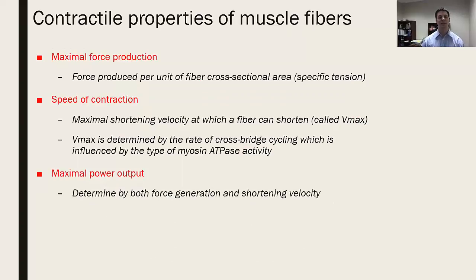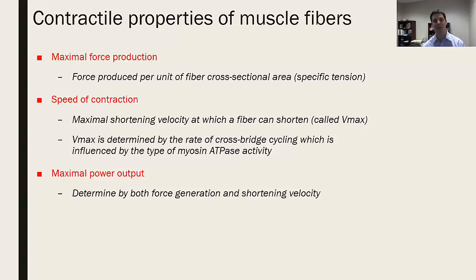If a fiber contains high ATPase activity, it can rapidly break down ATP and contract faster. If it has a slower ATPase, it will contract slower. This segues beautifully into contractile properties. We can look at maximal force production based on specific tension, defined as force per unit of cross-sectional area, because fiber types can be different sizes. Slow fibers are generally smaller than fast fibers, so to compare them we divide force produced by cross-sectional area to get specific tension.